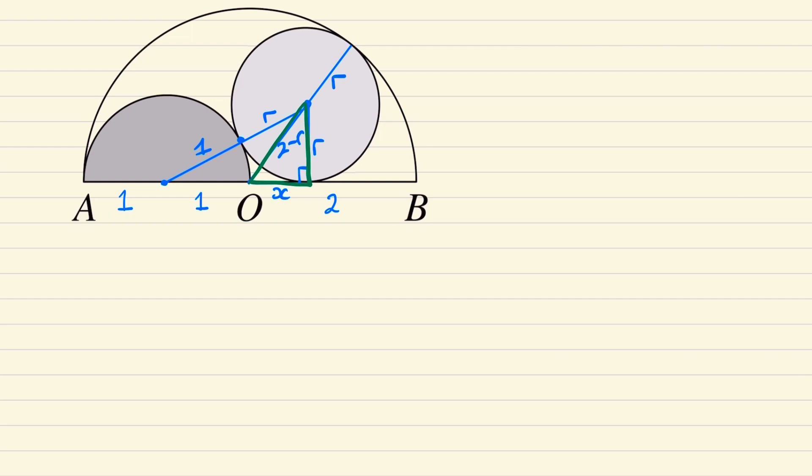So our first triangle says x squared plus r squared is the same as 2 minus r squared, which we can write as just r take away 2 all squared.